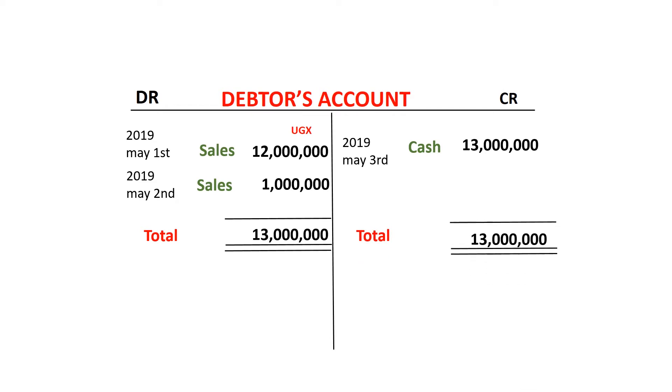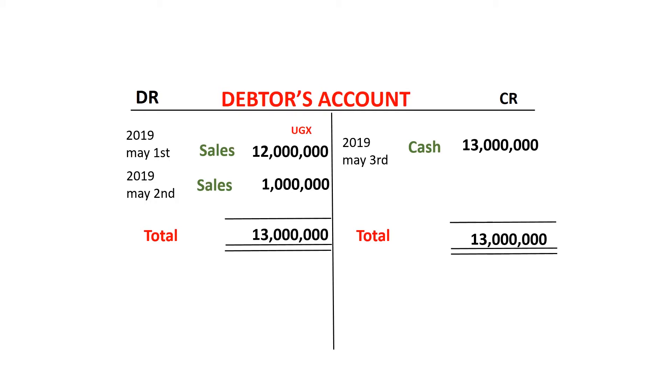The kind of picture that account is representing — the story it is telling — is that this particular debtor owed the business 13 million shillings and at a certain time came back and paid that money. At the end of the trading period we are supposed to close off, or balance off, this account. The process of balancing off is essentially adding the total of the debit side and the total of the credit side. Take note that the totals are supposed to be on the same line always. If the account has only one transaction, you don't need to do totals — you just double underline the figure and you have balanced off the account.